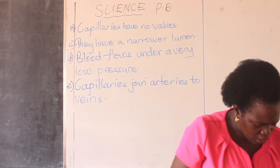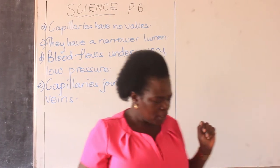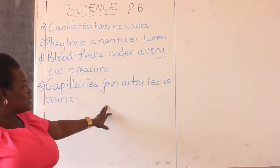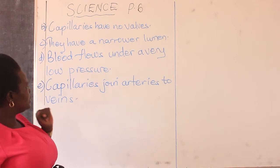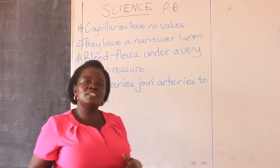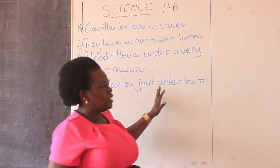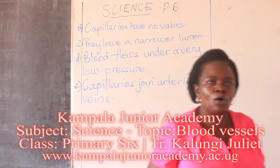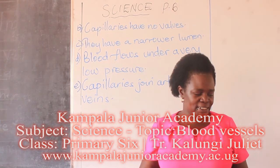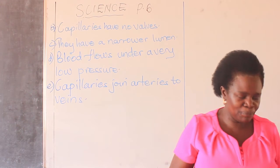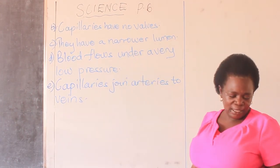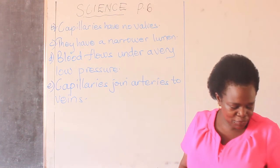So children, that was about capillaries and about blood vessels. In our next lesson, we are going to learn about another organ of the circulatory system, which is the heart. In the next few minutes, I will be coming back for another component of the circulatory system. Thank you for listening.